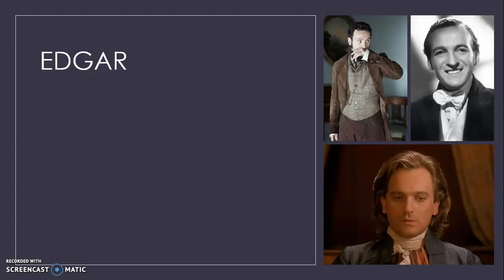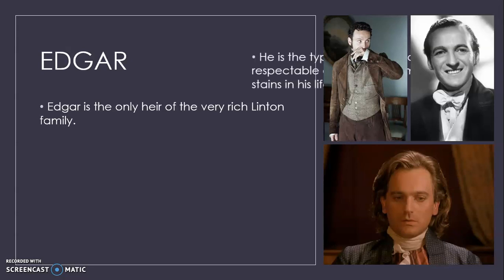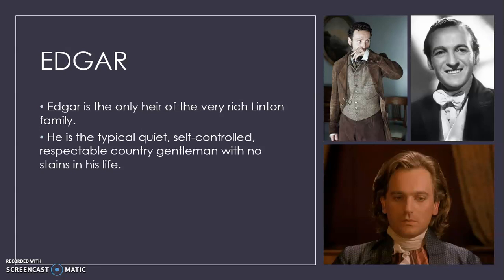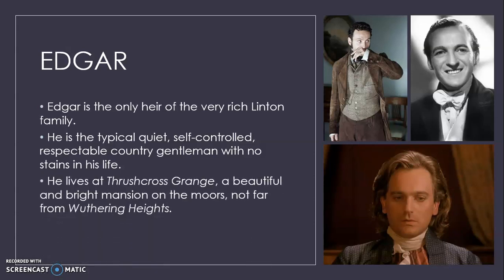Edgar is a totally different kind of man. He is the only heir of the very rich Linton family, so he will inherit all the family's wealth. He is the typical quiet, self-controlled, respectable country gentleman with no stains, no mysteries, no guilt in his life — the perfect opposite to Heathcliff. He lives at another mansion, Thrushcross Grange, a beautiful and bright villa on the moors not very far from Wuthering Heights, making him neighbour to Heathcliff and Catherine.